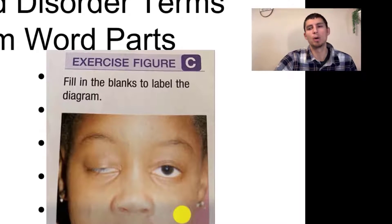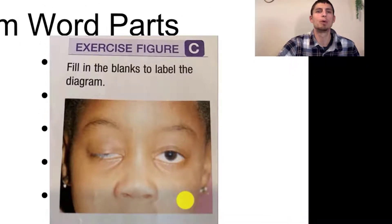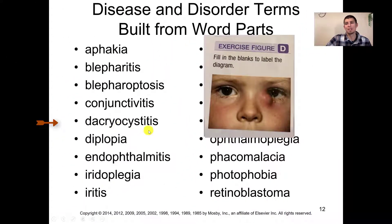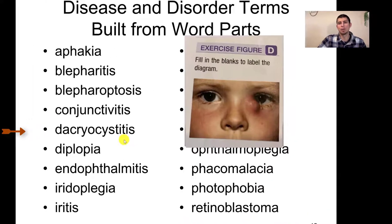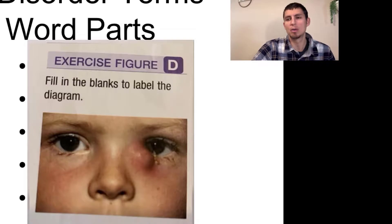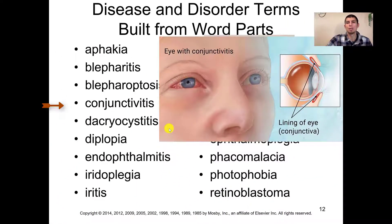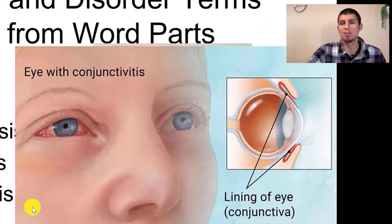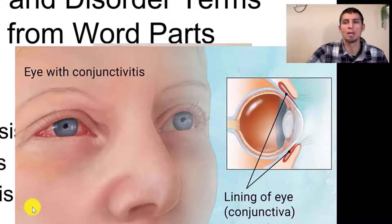Blepharoptosis — blepharo meaning eyelid, and ptosis from previous chapters meaning drooping — so here we see a drooping eyelid. This image is of dacrocystitis: dacro meaning that tear duct combining form, and cystitis indicating an inflammation of that tear duct gland. Conjunctivitis is probably the most popular one you're going to see — that's where you've got an inflamed conjunctiva, so it becomes reddened, which is where we get pink eye or red eye.